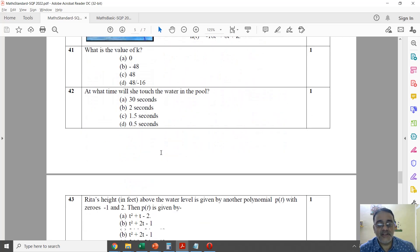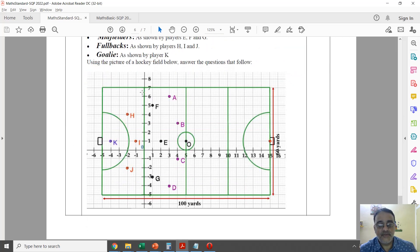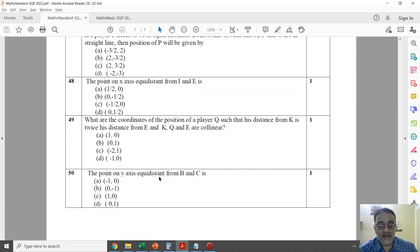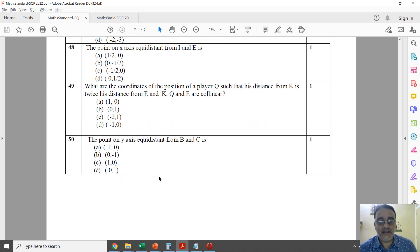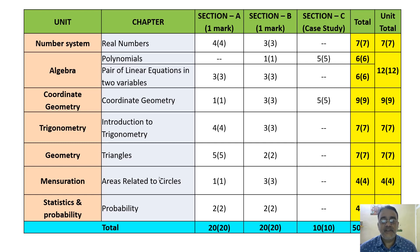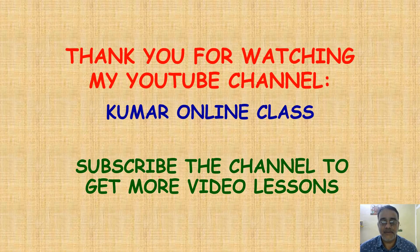The case study questions follow — one from Polynomials and one from Coordinate Geometry — each with five questions. This is the blueprint of the Maths Standard paper. I will share it in your class group. That's all for today's session. Thank you very much.